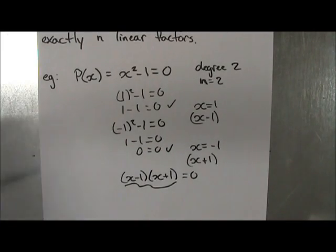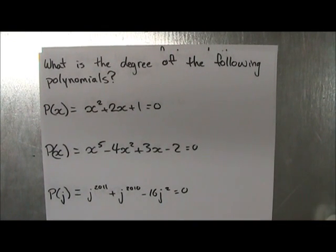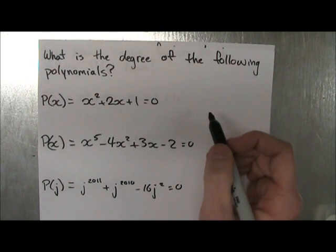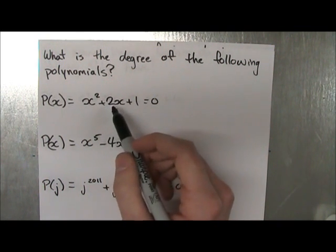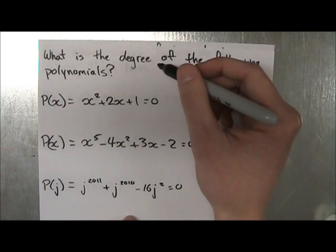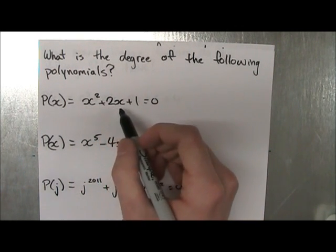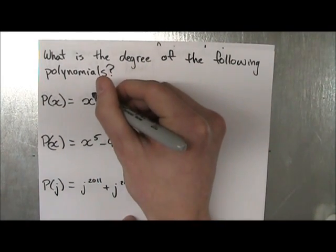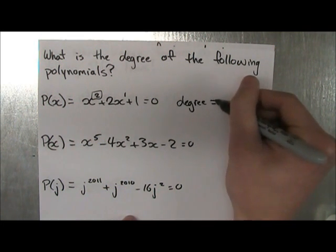Okay, so let's move on to some questions to help exercise what we just learned. So my first question states, what is the degree of the following polynomials? So our first polynomial is p of x, and it has x squared plus 2x plus 1 is equal to 0. So we're looking for the degree. And if you remember, the degree is the highest power within the equation. So we have x squared plus 2x plus 1. So we have x to the 2 and x to the 1. So obviously, our highest power is 2, and therefore, the degree of this polynomial is equal to 2.